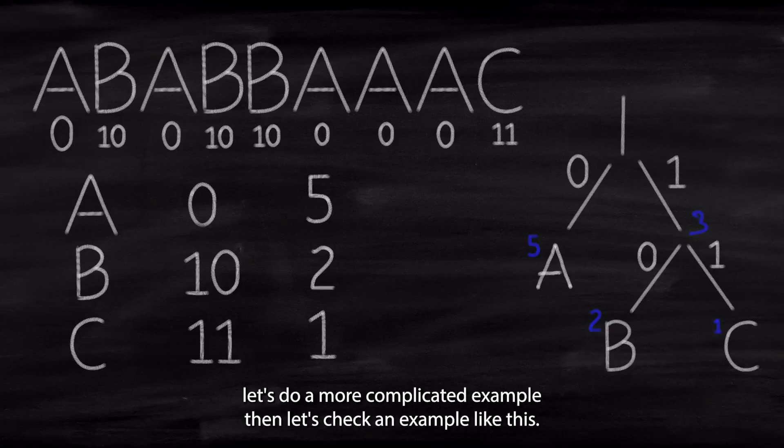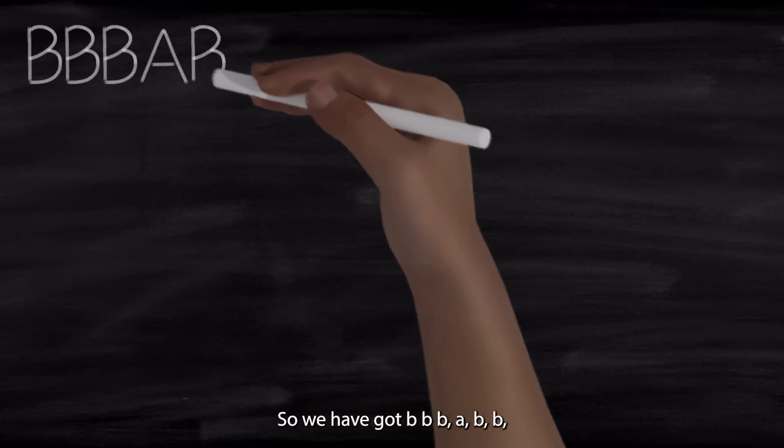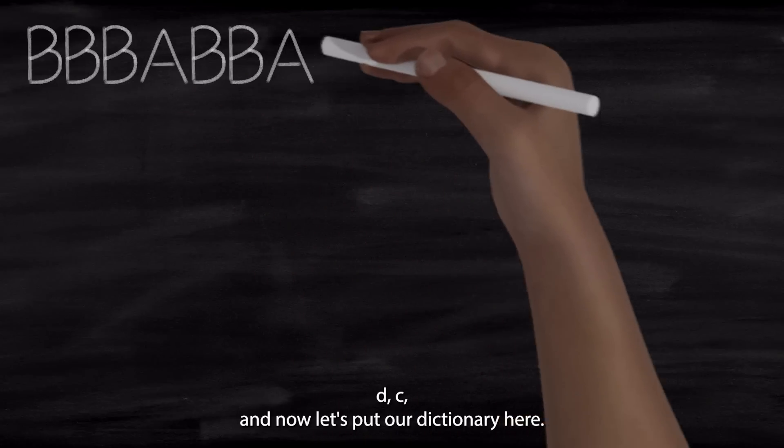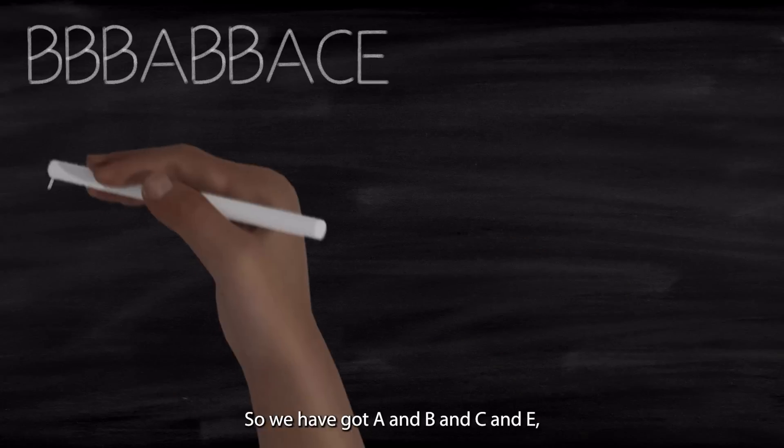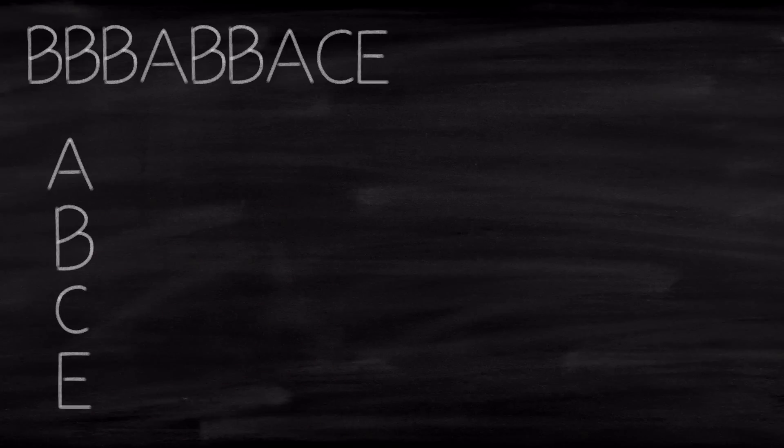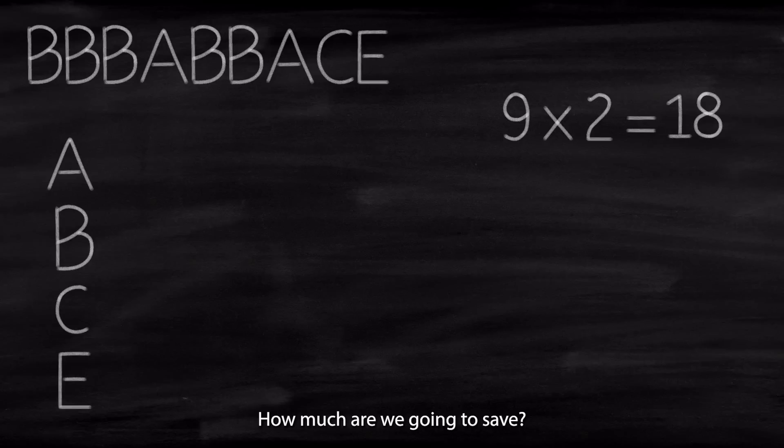All right. Let's do a more complicated example then. Let's check an example like this. So we have got B, B, B, A, B, B, A, C, E. And now, let's put our dictionary here. So we've got A, B, C, E. And of course, if we have a fixed length code, that would be 2 bits as well. So 9 characters times 2 equals 18 as well. So that's the same. That's the fixed length. Let's see the variable length. How much are we going to save?